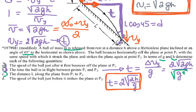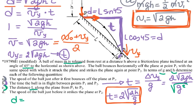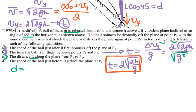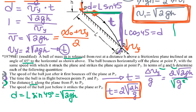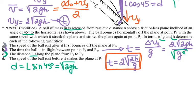For part C, I need to find the length L, the distance traveled along the incline. The horizontal distance is L sine 45, which equals the average horizontal velocity — square root of 2GH — times the time, which is 2 times the square root of 2H over g.